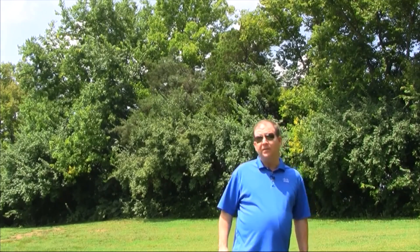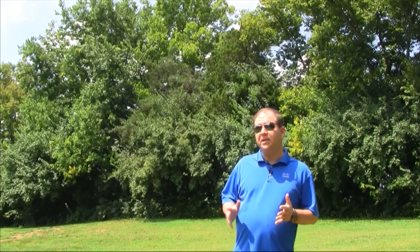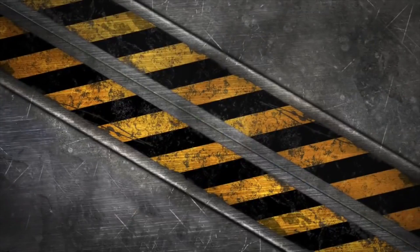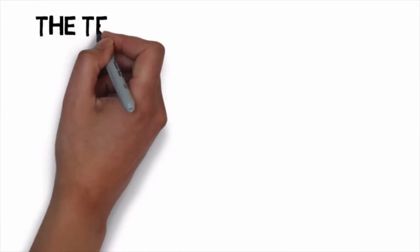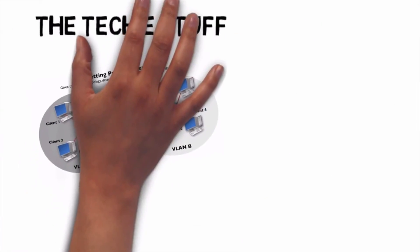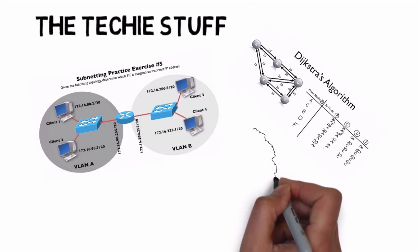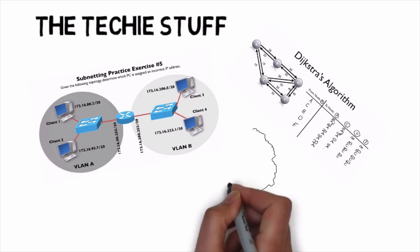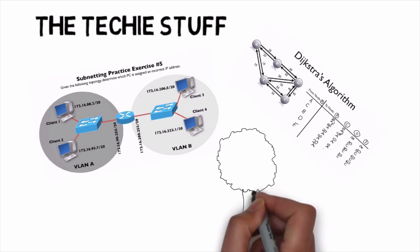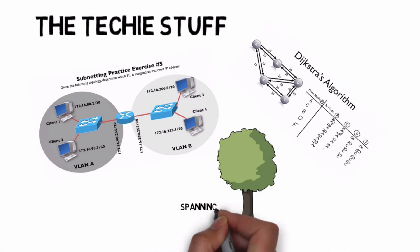My name is Kevin Wallace and in this video you're going to see three types of mistakes that Cisco certification candidates make when they take an exam, even the experienced ones. First, there's the techy stuff like subnet mask calculations, figuring out how OSPF works with the Dijkstra algorithm, and of course there's Radia Perlman's spanning tree protocol — we've got rapid spanning tree, multi-instance spanning tree, and per-VLAN spanning tree.